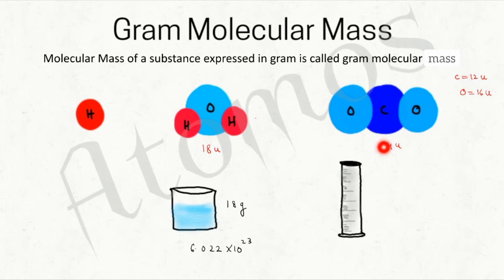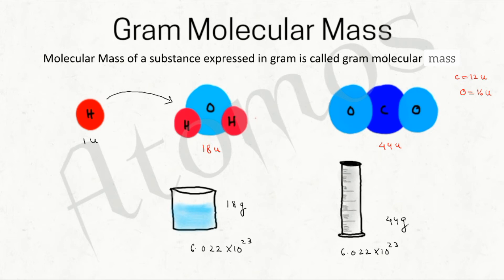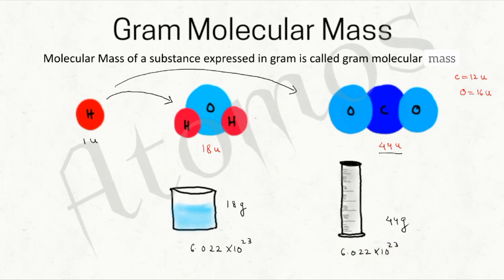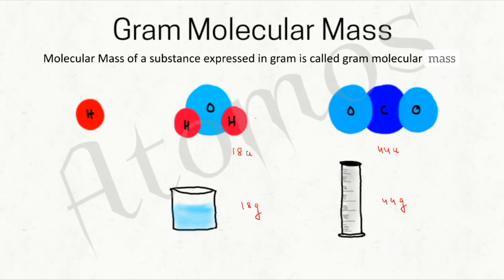In the same way, 44 grams of carbon dioxide will contain 6.022 × 10²³ molecules of carbon dioxide. The reason is that one molecule of water is 18 times heavier than one hydrogen atom, and one molecule of carbon dioxide is 44 times heavier than one hydrogen atom. So 18 grams of water and 44 grams of carbon dioxide both contain the same number of molecules — 6.022 × 10²³.